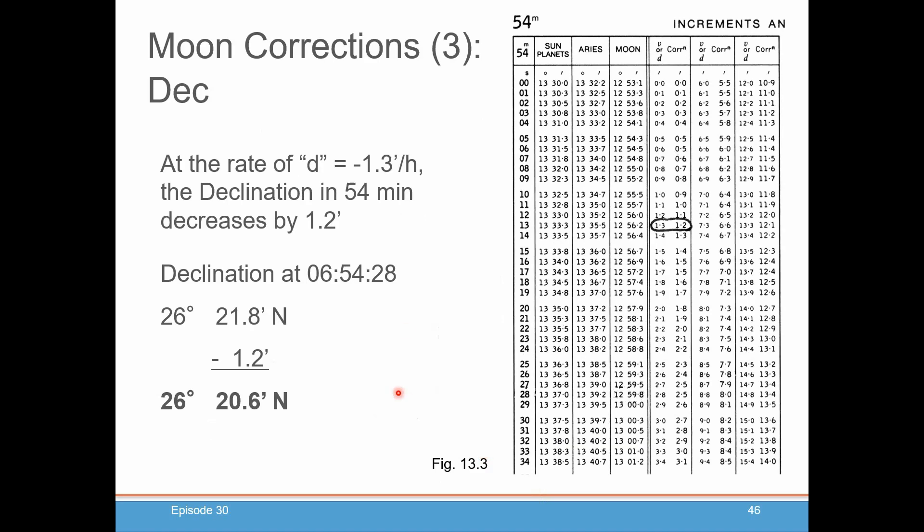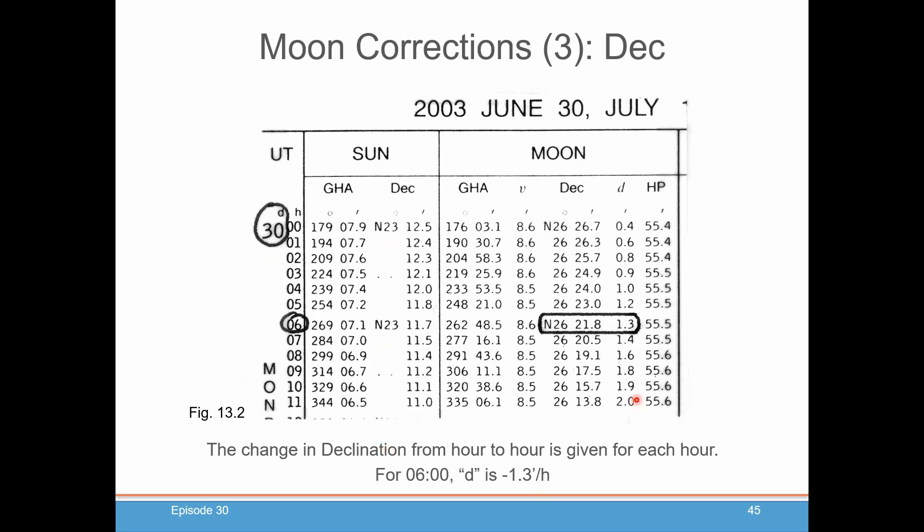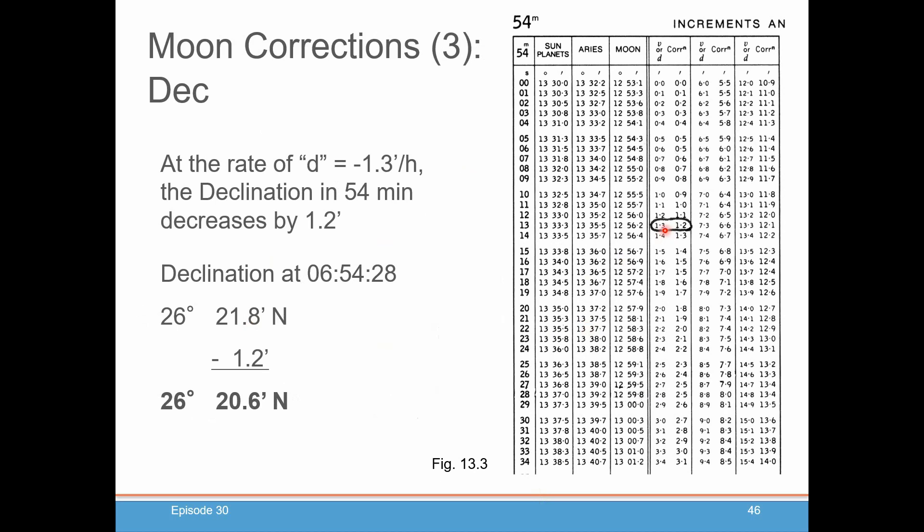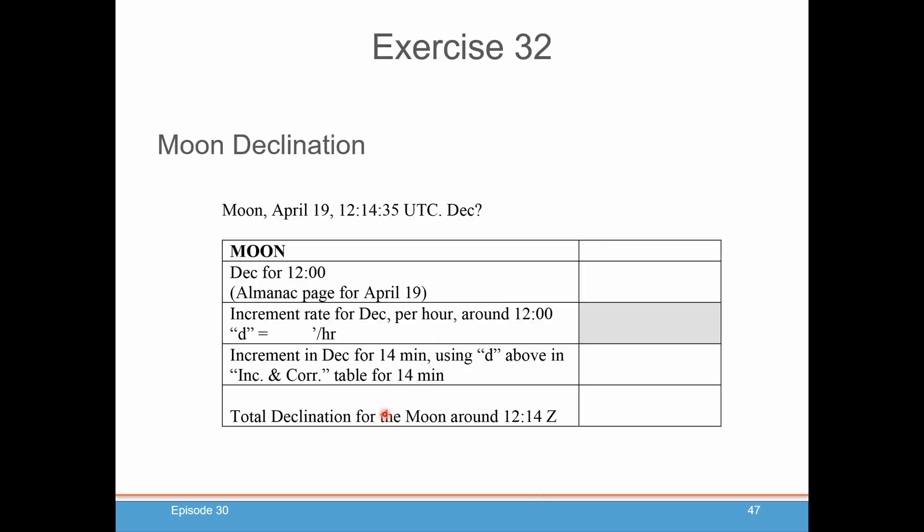Again, we just go into our table, 54 minutes. We obviously recorded the declination of when we started, which was north 26, 21.8. And then we're going to subtract with our V of negative 1.3. We have to subtract 1.2. Again, very simple calculation, very similar to the planets. And again, we have an exercise, which you can do, and you will find the answers in your exercise manual.